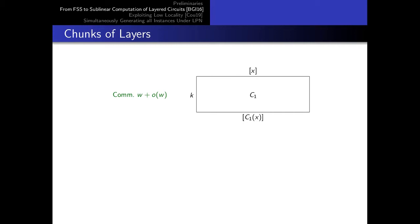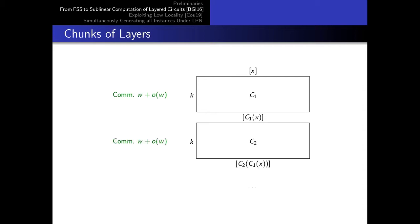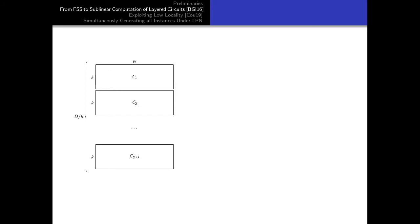Consider a circuit C1 of width W and depth K. Assume there exists a protocol which allows two parties to convert additive shares of X into additive shares of C1 of X, using communication roughly proportional to the width. If such a protocol exists and we consider another circuit C2, the parties can reuse the protocol to convert additive shares of C1 of X into additive shares of C2 of C1 of X, and do so repeatedly.